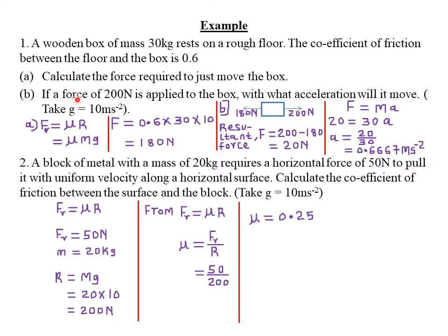For part B, we are told that if a force of 200 newton is applied to the box, with what acceleration will it move? We can sketch this motion: a 200 newton force is applied in the right-hand direction. Friction always tries to resist the intended motion, so if the applied force acts to the right, the frictional force acts in the opposite direction — to the left — which is 180 newton.